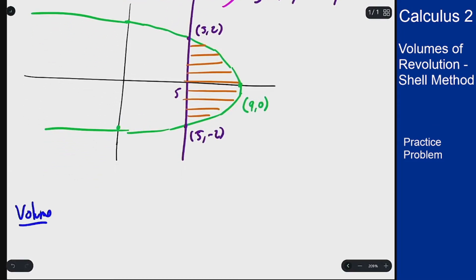So our volume by the shell method will be 2 pi, the integral over the range of y values, so minus 2 to 2, of the radius as a function of y times the height as a function of y.